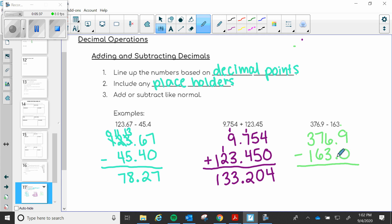And now I can subtract like normal. Just remember that whenever you have a whole number, your decimal point for the whole number always goes at the very end of the whole number. So nine minus zero is nine. Bring down your decimal point. Six minus three is three. Seven minus six is one. And three minus one is two. So our final answer is 213.9.